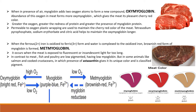In the presence of air, myoglobin readily adds two atoms of oxygen to form a new compound which is known as oxymyoglobin. Oxymyoglobin is a cherry-red form of myoglobin which is formed by the addition of two oxygen atoms. It is responsible for the intense red color that can be seen on the surface of meat which is exposed to air for a while. An abundance of oxygen favors the formation of oxymyoglobin and ensures that meat will have a pleasing bright-red color.